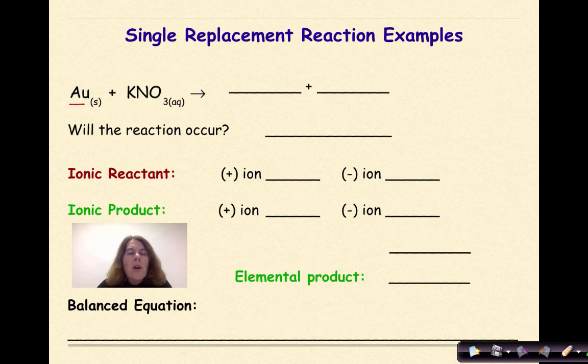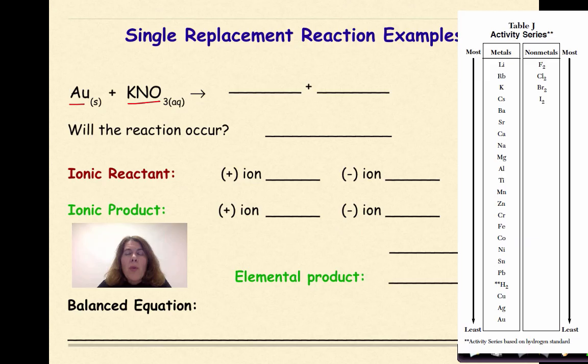We have gold plus KNO3 potassium nitrate. Will this reaction occur? So if we look at table J and we look at the location of AU and we look at the location of potassium, we can see that gold cannot replace the potassium. Therefore will this reaction occur? No.